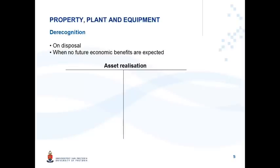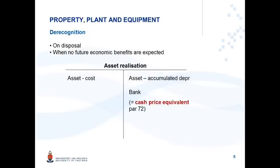An asset is derecognized on disposal or when you don't expect any further economic benefits, because you no longer meet the definition of an asset. In the asset realization account, you have to derecognize the asset's cost and the asset's accumulated depreciation as they are two separate accounts. The cost less the accumulated depreciation represents carrying amount.